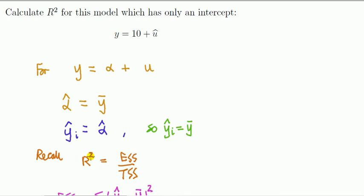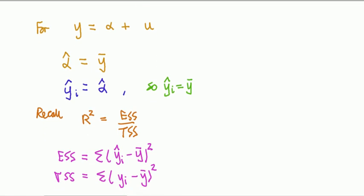Recall that the R squared is equal to the explained sum of squares by the total sum of squares. Now, let's look at the formula, recall the formula for the explained sum of squares. It's this and the total sum of squares. But we only need this one, right?